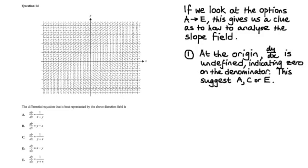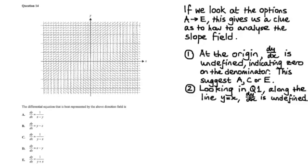And basically what I did was this. Eventually I came up with this idea. At the origin, dy, dx is undefined, which indicates 0 on the denominator. The denominator is going to be 0. This would suggest option A, C, or E. So B and D are out the window. So we've cut it down to 60% of the possibilities already.